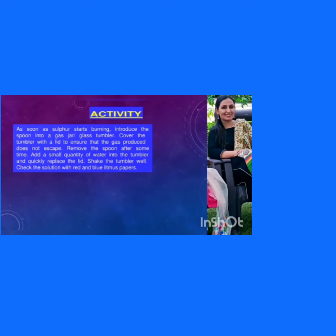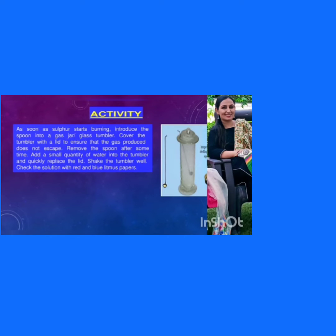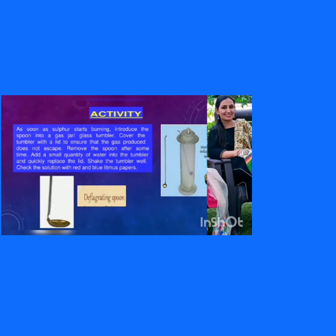To show this, we are going to study an activity in which we will take a small amount of sulfur, a deflagrating spoon, and a gas jar. We are going to burn sulfur in the deflagrating spoon — a spoon with a long handle generally used to demonstrate deflagration, that is, to make something burn violently. On burning, the sulfur reacts with oxygen and forms sulfur dioxide.